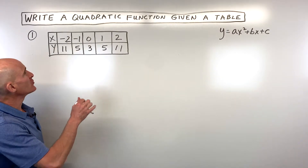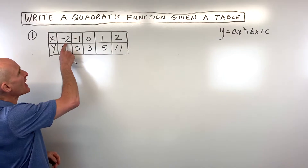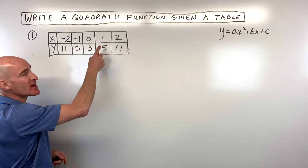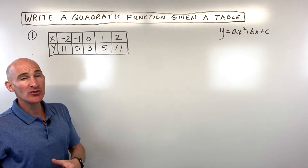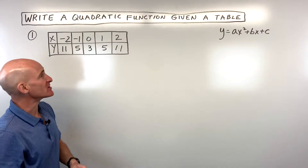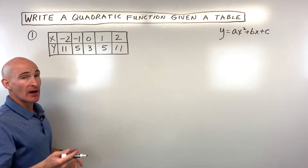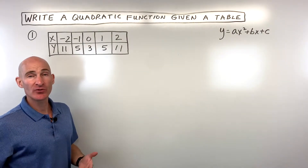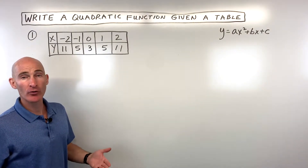The first thing we want to do is notice how these x values are increasing by one each time. We can use a method called finite differences to figure out whether this is a first degree, second degree, third degree polynomial, etc.